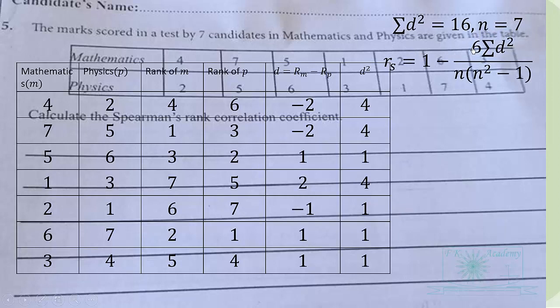of d squared times six into n into n squared minus one. Then the summation of d squares, this one we sum them we get 16. And then also the number of pairs, we have seven pairs over here, seven sets of pairs of points.